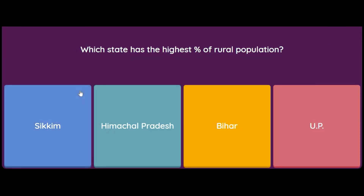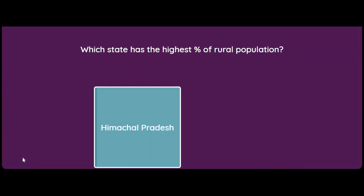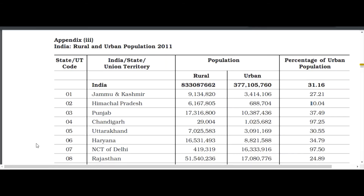Which state has the highest percentage of rural population? Options are Sikkim, Himachal Pradesh, Bihar, or UP. The answer is Himachal Pradesh. According to Appendix 3 in the book (last updated 2011), Himachal Pradesh has only 10% urban population, meaning 90% of its population is rural — the highest percentage of rural population.